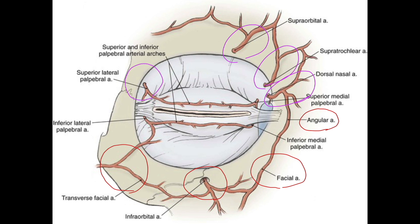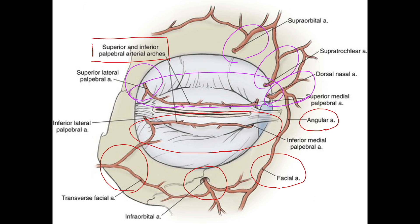This anastomosis zone means the whole upper lid and whole lower lid are supplied by blood pumped in via the superior and inferior palpebral arterial arches. That blood comes from both the internal and external carotid, medially and laterally — an extraordinary, fully overlapping supply.